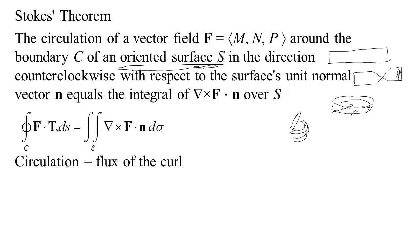To find the circulation around the boundary, just integrate del cross F dot n over the interior surface. Del cross F is the curl vector field, so you're finding how the curl aligns with the surface normal — it's the flux of the curl. Del cross F dot n must be well-defined throughout the surface; if there's a patch where it isn't defined, you'll get the wrong answer. That's the basic statement of Stokes' theorem, and we'll go on and do some examples.